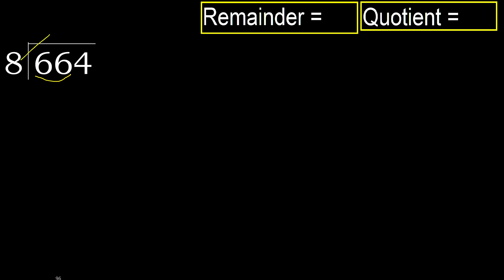8 multiplied by which number is nearest to 66, but not greater? 8 multiplied by 9 is 72, which is greater. 8 multiplied by 8 is 64, which is not greater — ok.